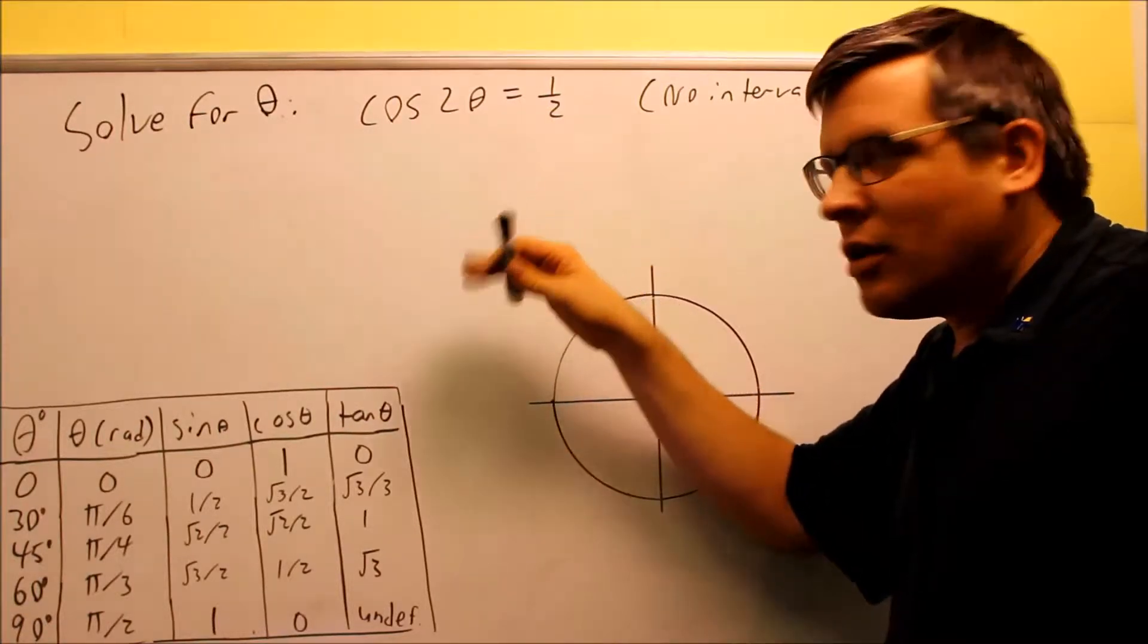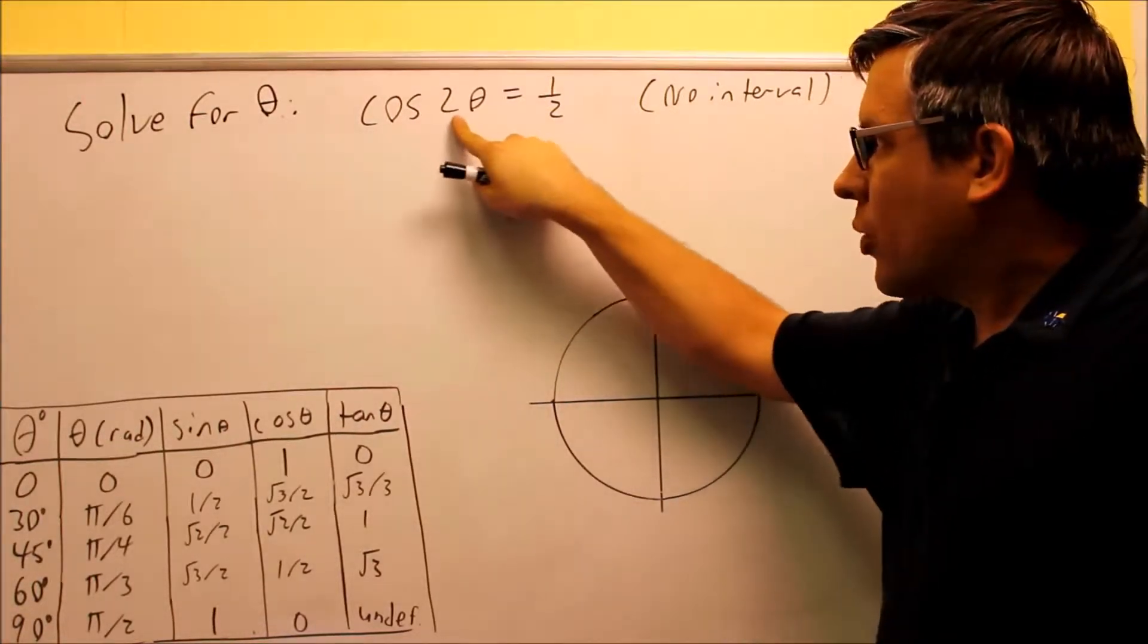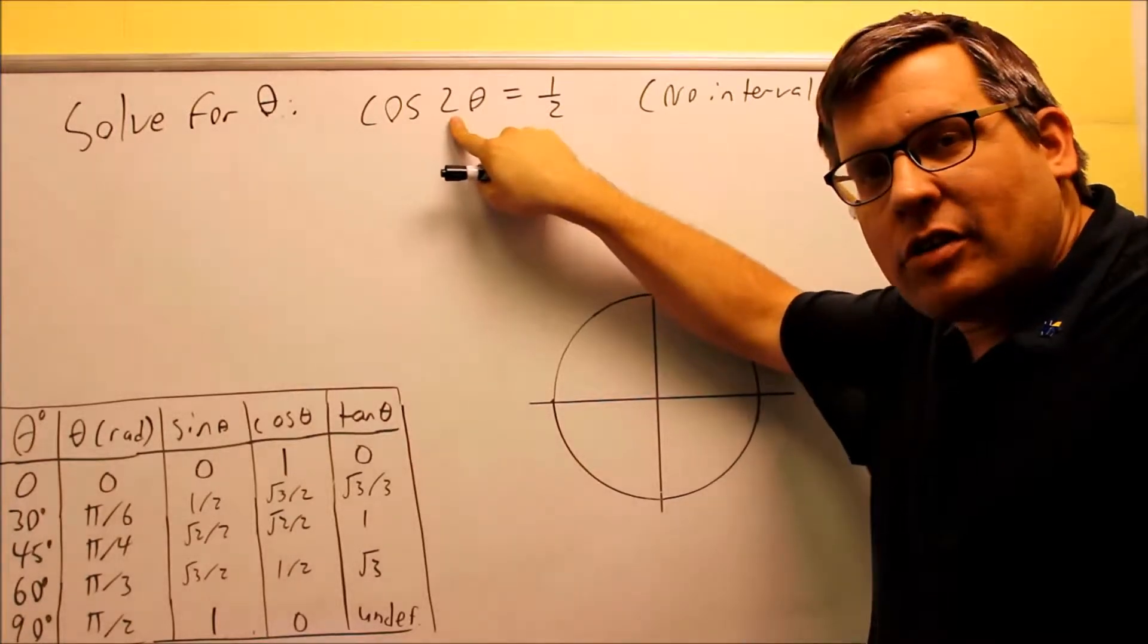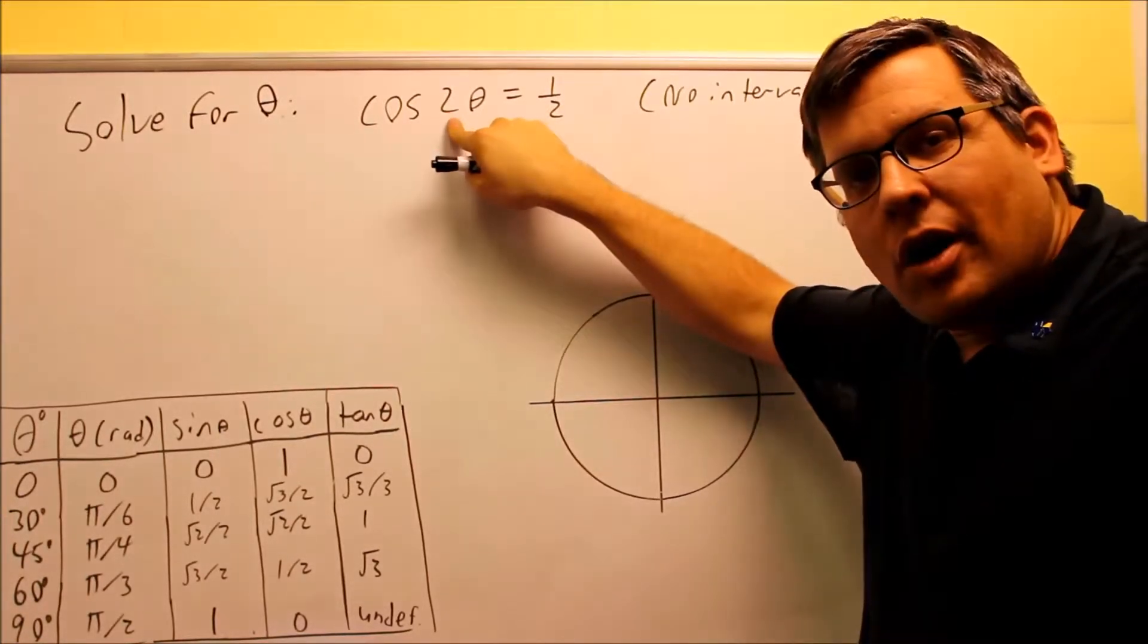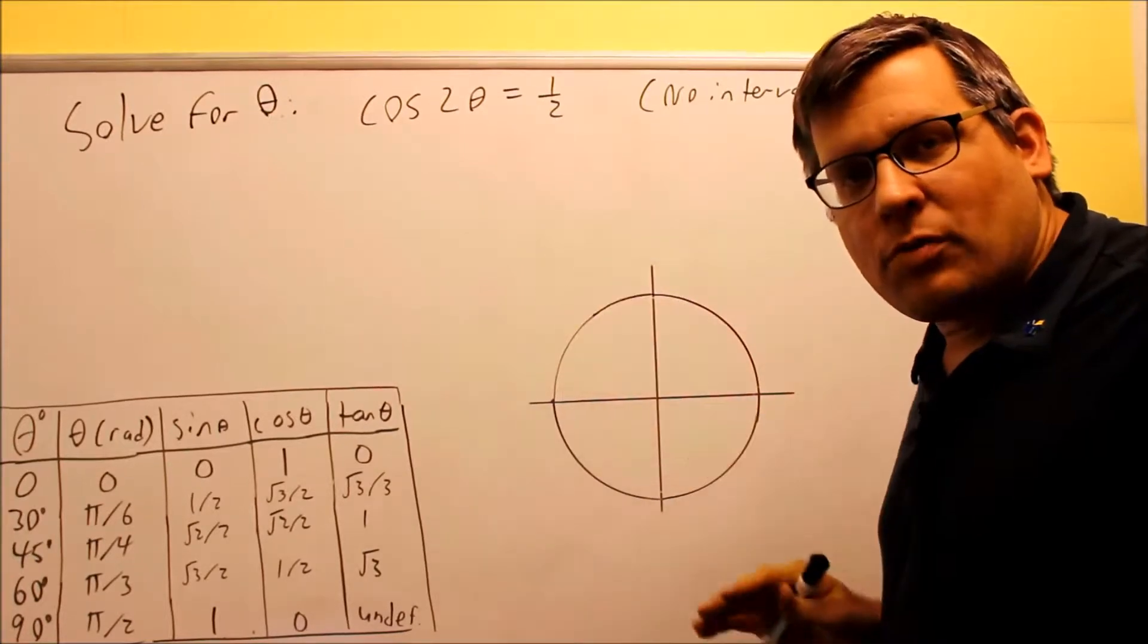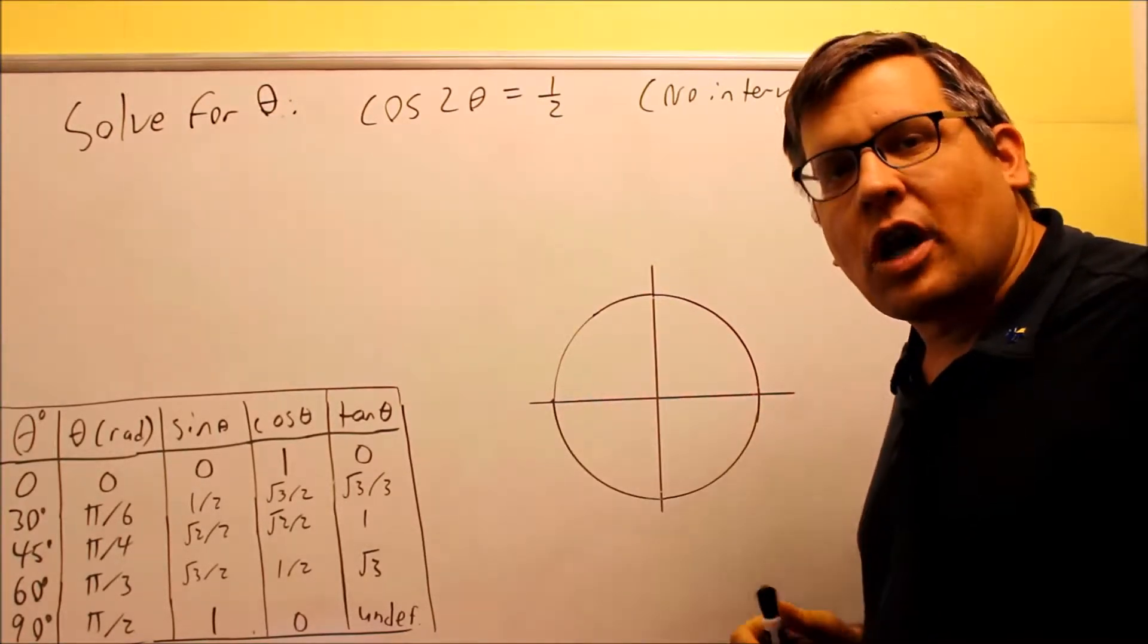Okay, the next couple problems we're going to take a look at now involves something where we don't have a regular single theta inside, we have some other number in front of it. So these involve a little bit different process. We'll take a look at a couple of these kind of examples.